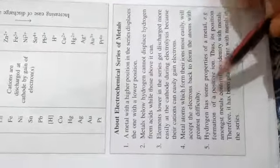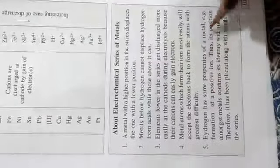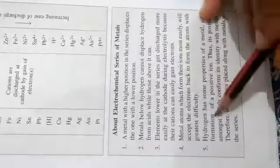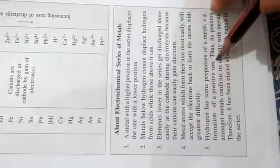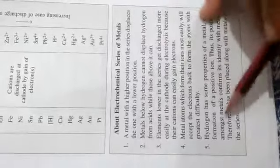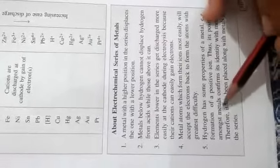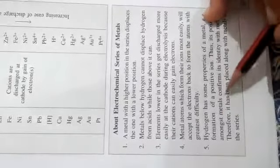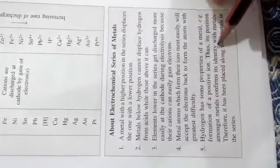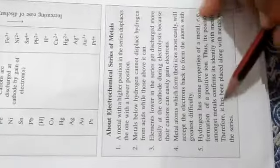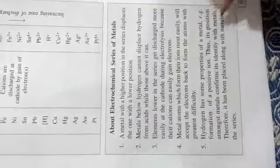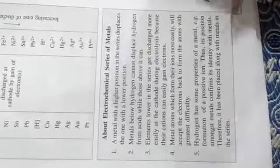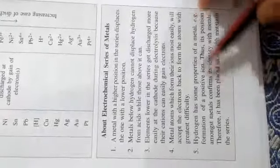Hydrogen has some properties of a metal, such as the formation of a positive ion. Its position amongst the metals in the series confirms its identity with metals. Therefore, hydrogen has been placed along with the metals in the electrochemical series.